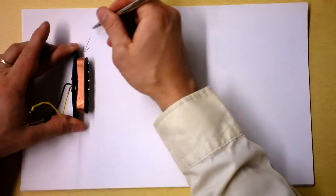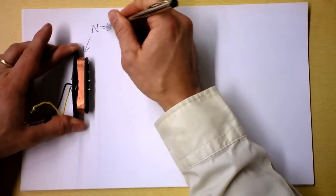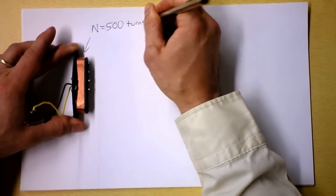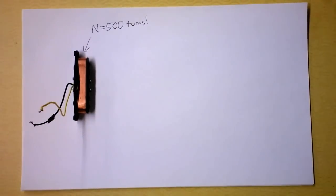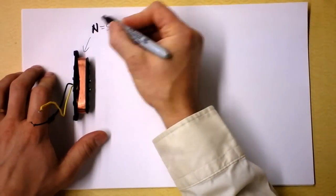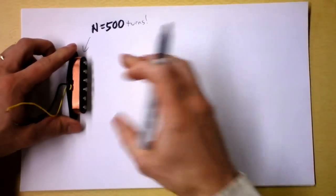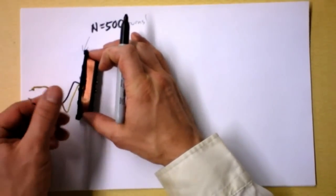This coil here has 500 or so turns. Wow, that's a lot of turns. Let's get a marker here. We're talking about 500 turns or more and out of this just comes two wires.